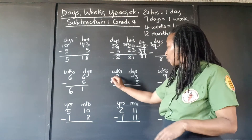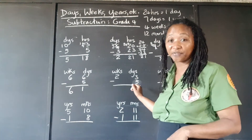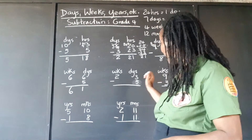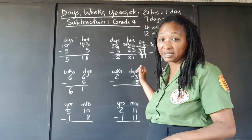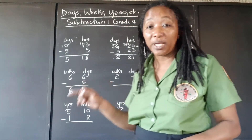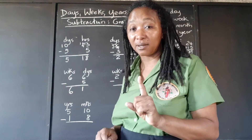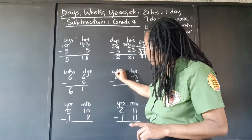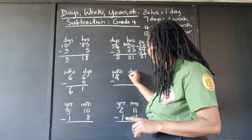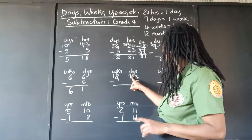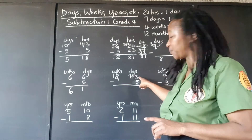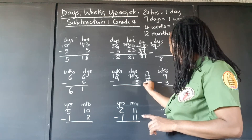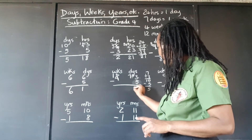Here we're taking 2 weeks 3 days and subtracting 5 days. We can't take 5 days if we just have 3 days, so we're going to go over to the weeks and take 1 week. But remember, we can't carry it here just as 1 — when we take 1 week from the 2 weeks, we carry it as 7 days. We add those 7 days to the 3 we already have: 7 plus 3 is 10. Then we take away the 5 days and we're left with 5 days.